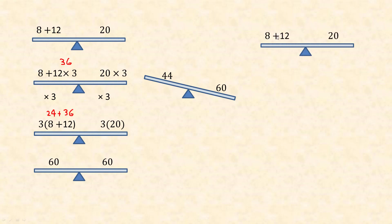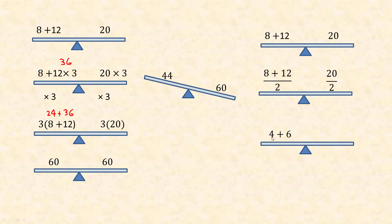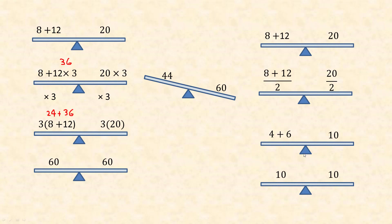Let's look at division. With 8 plus 12 on the left and 20 on the right, we divide both sides by 2. The 8 plus 12 gets divided by 2: 8 divided by 2 is 4, and 12 divided by 2 is 6. Of course 20 divided by 2 is 10. It's still balanced because 4 and 6 add to 10 — there's 10 on both sides. I divided by 2 and I divided both numbers by 2, so it's still balanced.